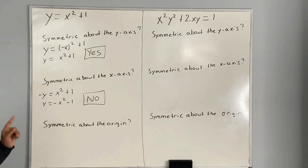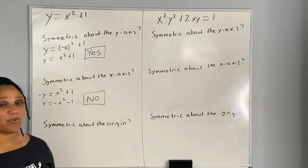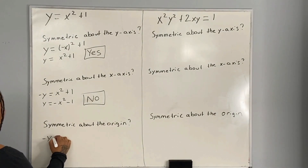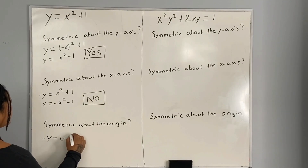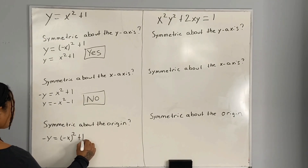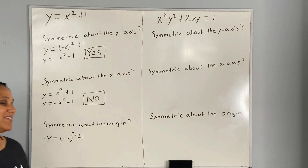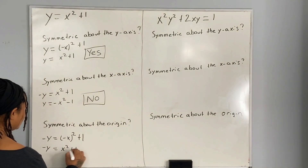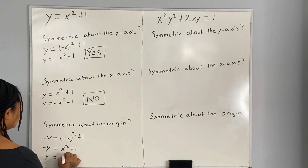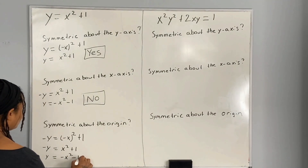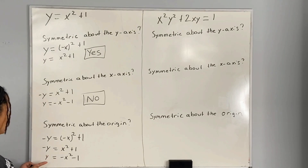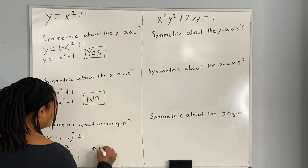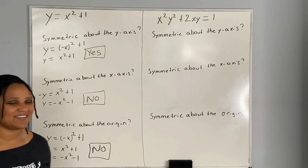Now let's check to see if the graph of the equation is symmetric about the origin. What we want to do is everywhere you see a y, replace it with negative y, and everywhere that you see an x, replace it with negative x, and see if we get the original equation. Here we get negative y is equal to x squared plus 1, which means y is equal to negative x squared minus 1. Our equation does not equal the original equation. Therefore, it is not symmetric about the origin.